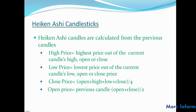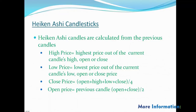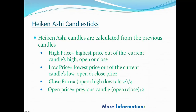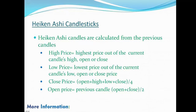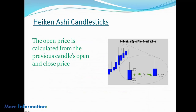Heikin Ashi candles are calculated from the previous candles. The high price is equal to the highest price out of the current candle's high, open, or close. The low price is equal to the lowest price out of the current candle's low, open, or close. The close price is equal to open plus high plus low plus close, divided by four. The open price is equal to the previous candle's open plus close, divided by two.